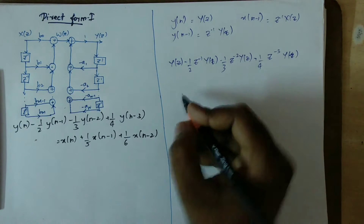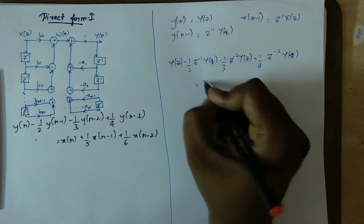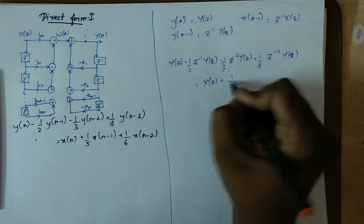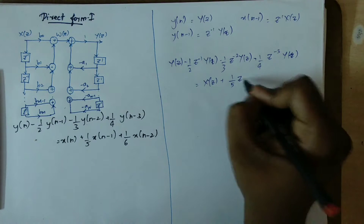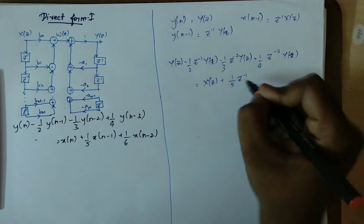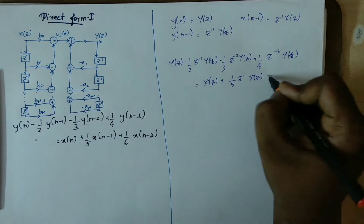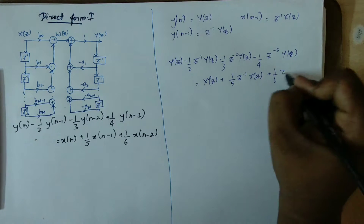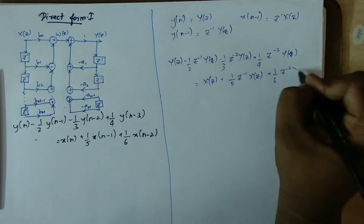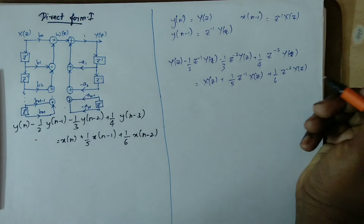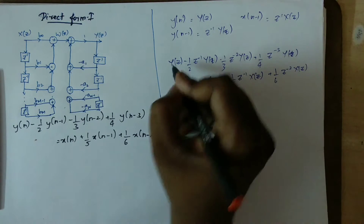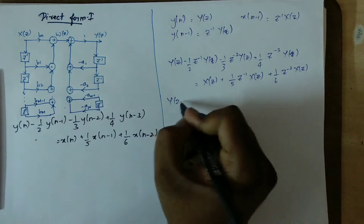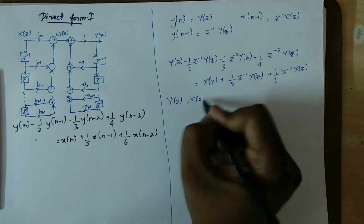Now the question continues with X(z): plus 1/5 · z^(-1) · X(z), plus 1/6 · z^(-2) · X(z). So Y(z) plus Y(z) equals X(z).